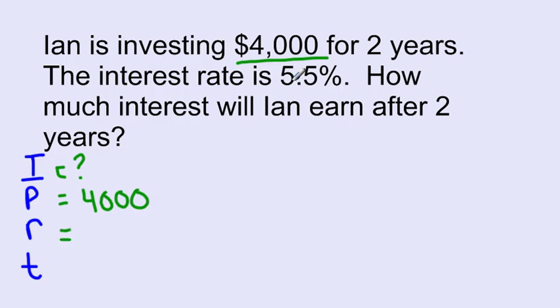The rate is the interest rate as a decimal. So we're going to have to take that 5.5% and divide by 100. If you wanted to punch that into your calculator, you can feel free to do that. It would be 5.5 divided by 100. And T is the number of years. So they tell us it's two years.